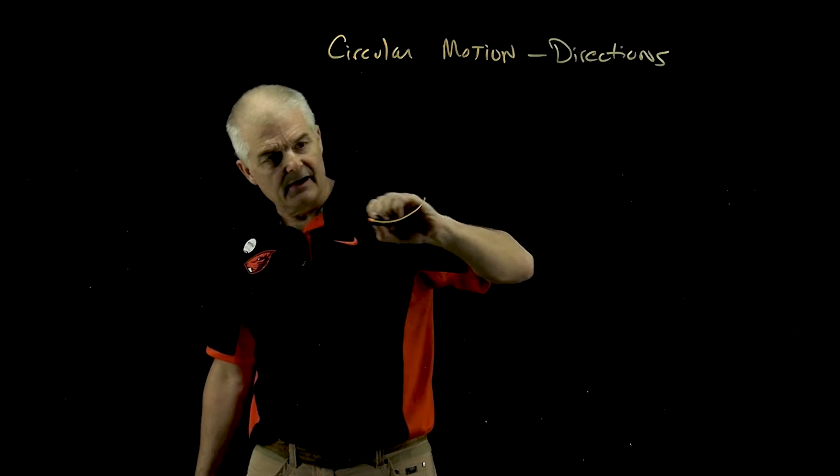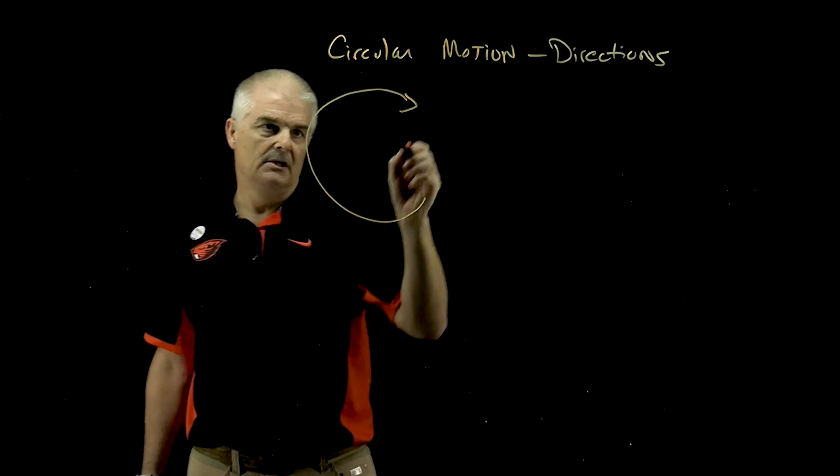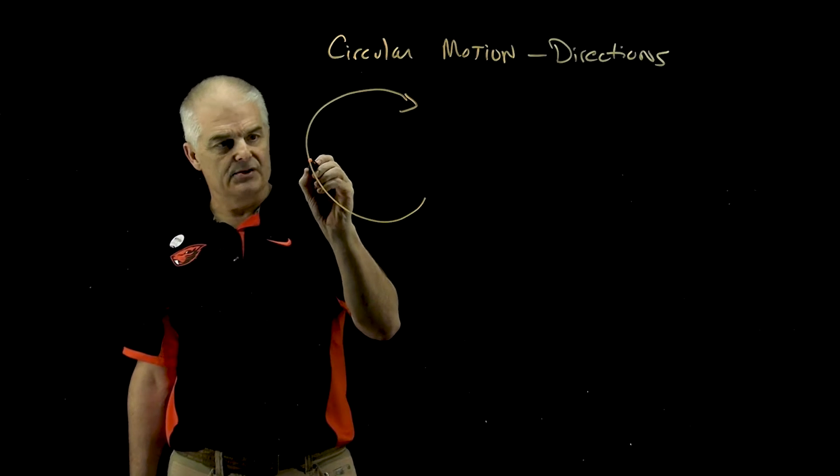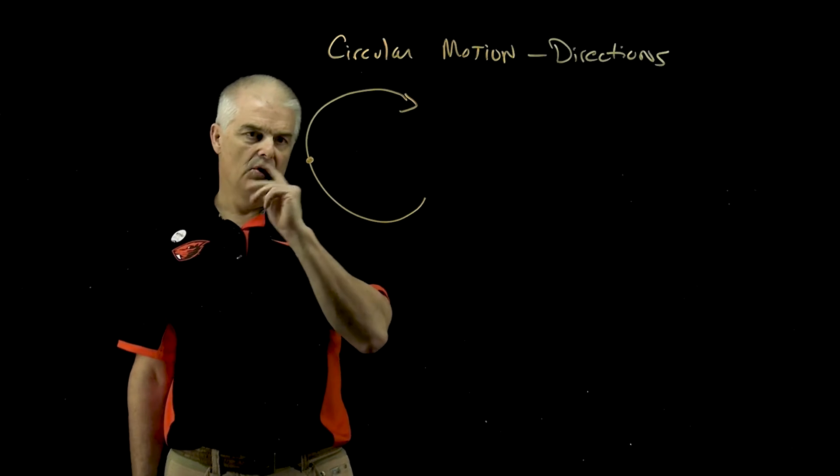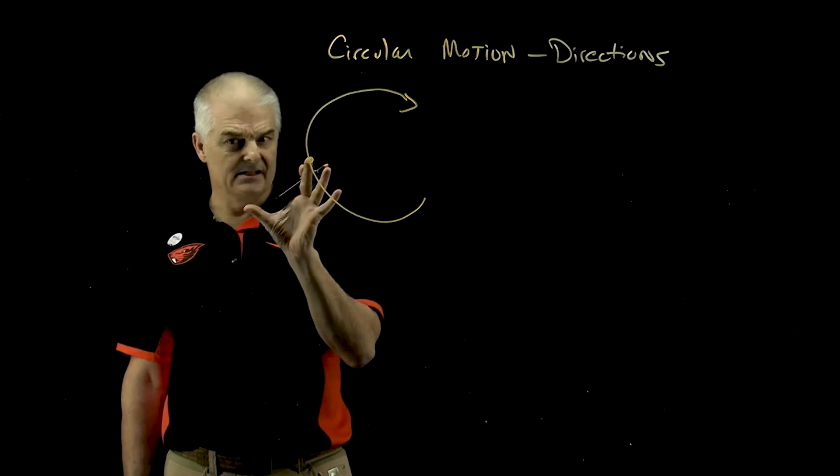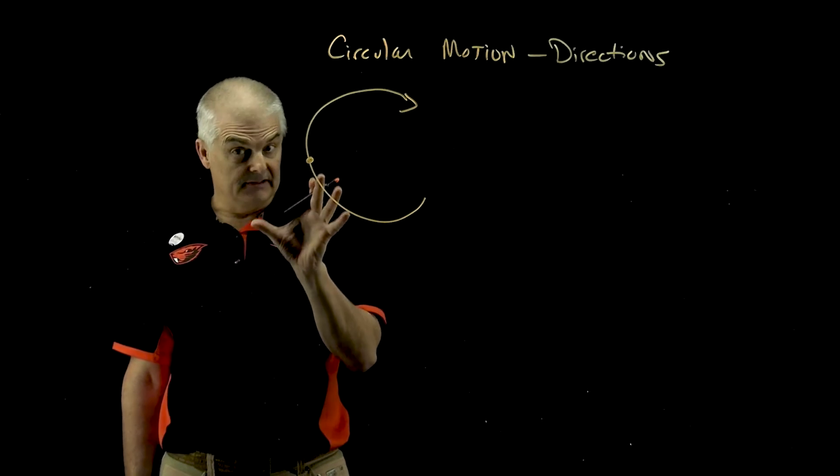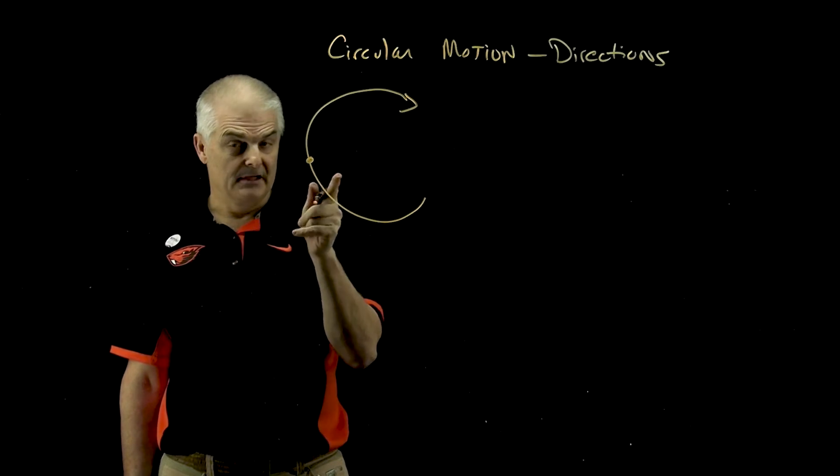So take, for example, I have an object moving in a circle, and it's right here in the circle. What direction is it moving in terms of velocity and acceleration? Let's have a look.